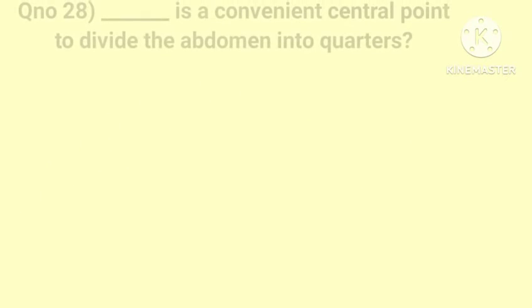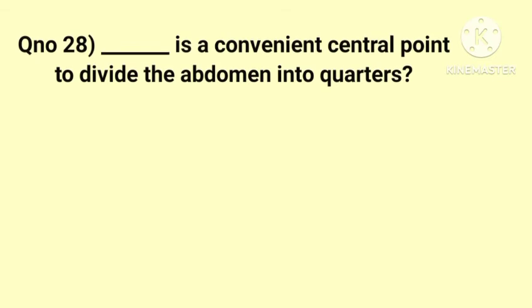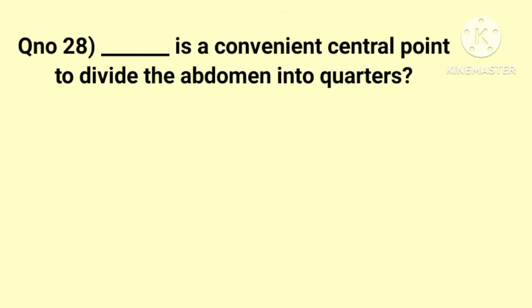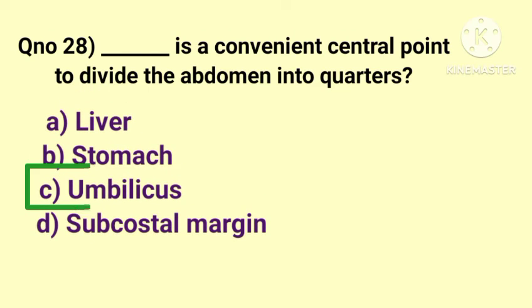Question number 28. Dash is a convenient central point to divide the abdomen into quarters. Correct answer is option C, umbilicus.